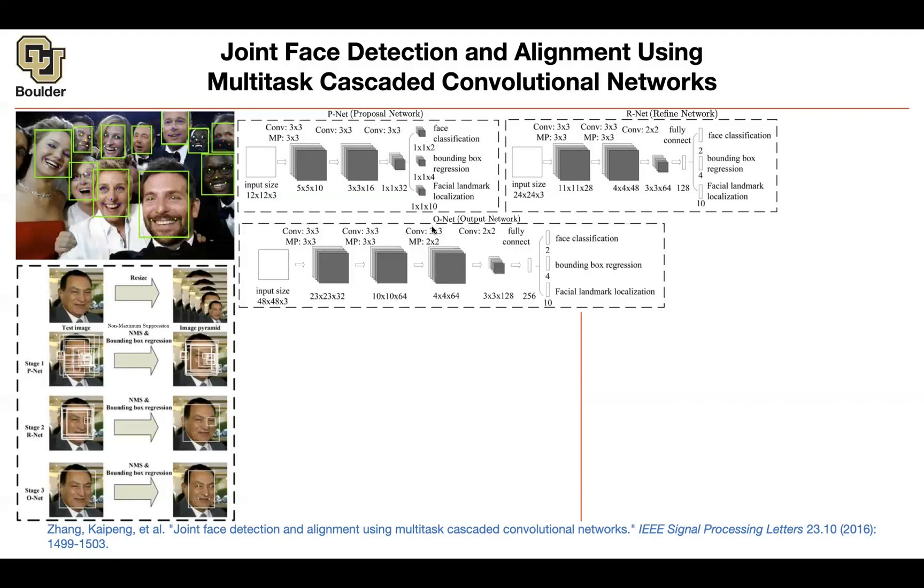The next neural network is also the same, but it's working at a higher resolution. It has the same structure, same output: 2, 4, 10.